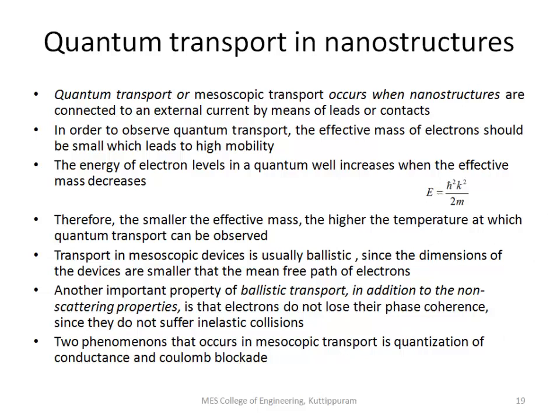Another condition is that the mesoscopic device nanostructure energy transport and movement must be ballistic. Ballistic means the dimension of the device is smaller than the mean free path of the electron. This means no scattering is available. No scattering means the phase is coherent. So this is the nature of quantum transport.